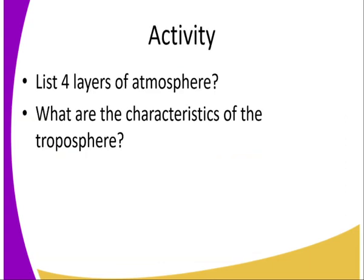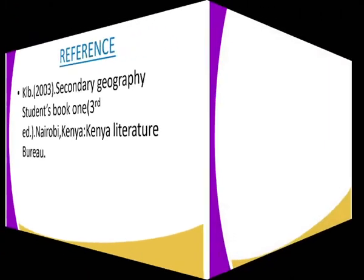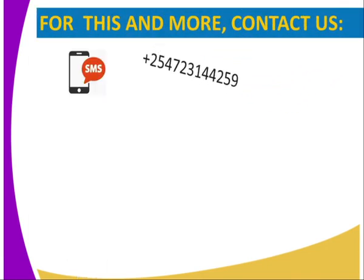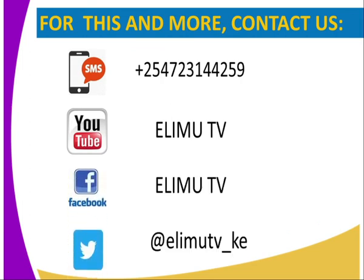The activity for today: list the four layers of the atmosphere. Another question: what are the characteristics of the troposphere? For more information, visit the KLB 2003 Secondary Geography Student Book 1, 3rd edition. You can reach us via SMS, YouTube, Facebook, or Twitter. Otherwise, stay tuned to EDIM TV. Thank you.